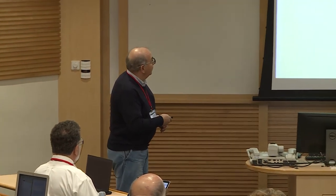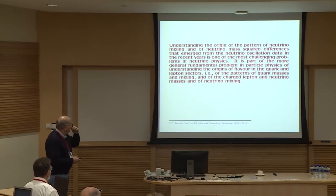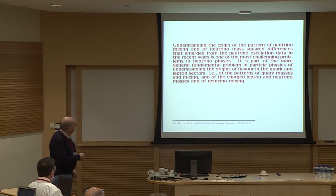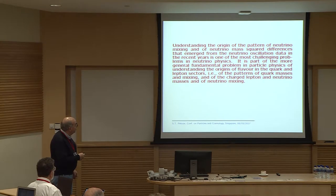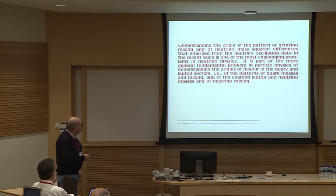This talk will be dedicated to neutrinos, and more specifically to the attempts to understand the observed pattern of neutrino mixing, which was determined in neutrino oscillation experiments using symmetries. Understanding the origin of the pattern of neutrino mixing and of neutrino mass squared differences is one of the most challenging problems in neutrino physics, and part of the more general fundamental problem of understanding the origin of flavor in the quark and lepton sector.